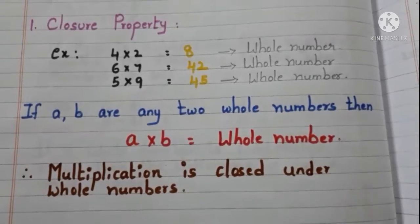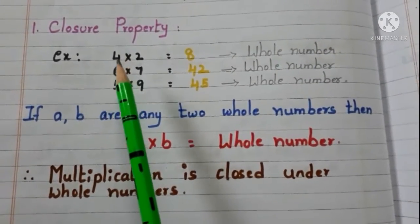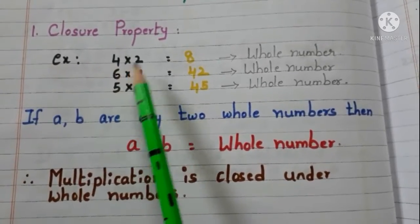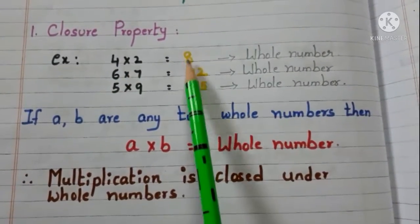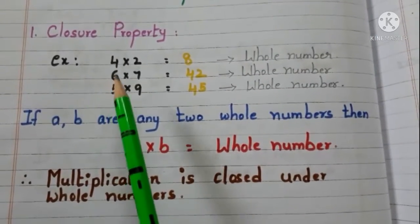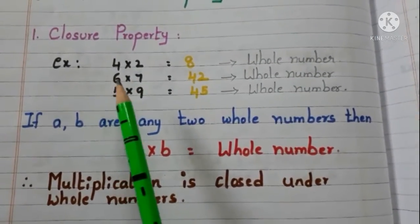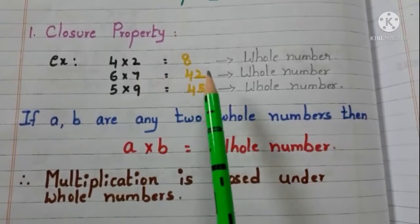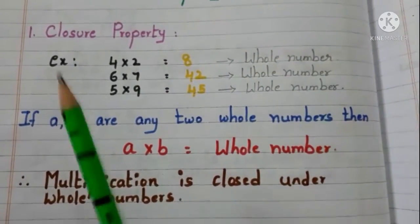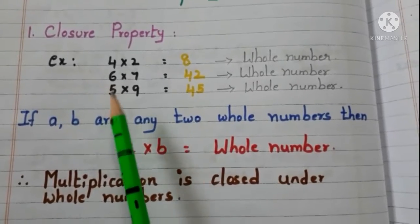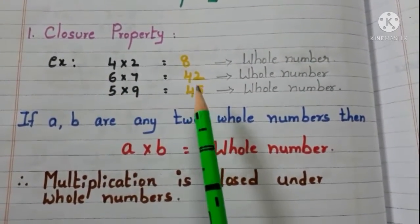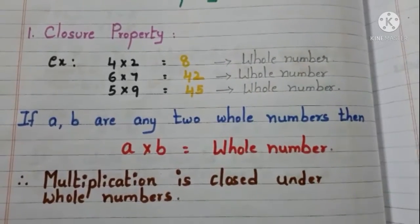Let us see with the examples. Take 2 whole numbers 4 and 2 and multiply them. 4 times 2 are 8, and 8 is a whole number. Take another 2 whole numbers 6 and 7, multiply them. 6 times 7 are 42, and 42 is a whole number. Now take 2 whole numbers 5 and 9, multiply them. 5 times 9 are 45, and 45 is a whole number.